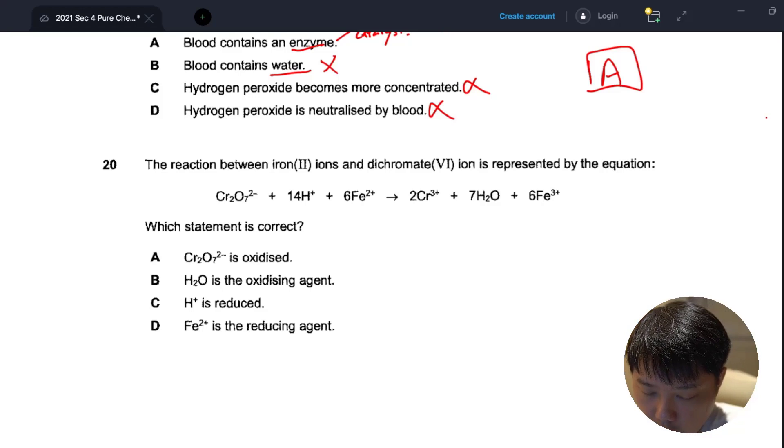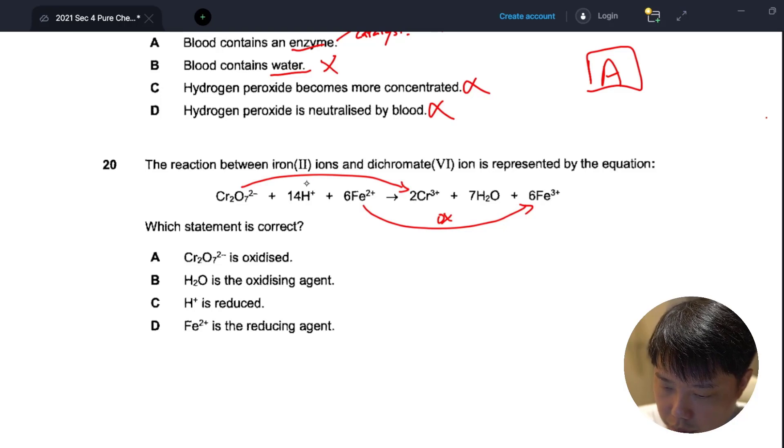Okay, let's carry on with question 20 from CHIJ 2021. The reaction between iron(II) ions and dichromate(VI) ion is represented by this equation. Iron(II) is oxidized to iron(III), and dichromate is reduced to chromium(III) plus.